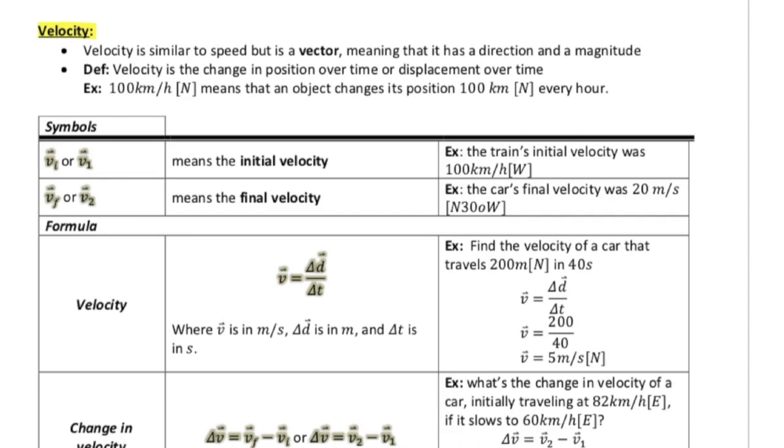Now moving on to velocity. And this is a very important distinction here. Velocity is similar to speed, but it is a vector, meaning that it has direction and magnitude. So the definition of velocity is position over time, or displacement over time is another way to look at it.